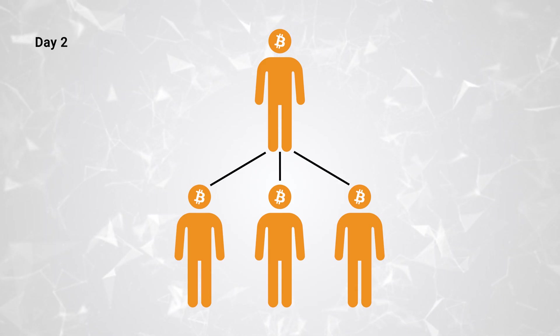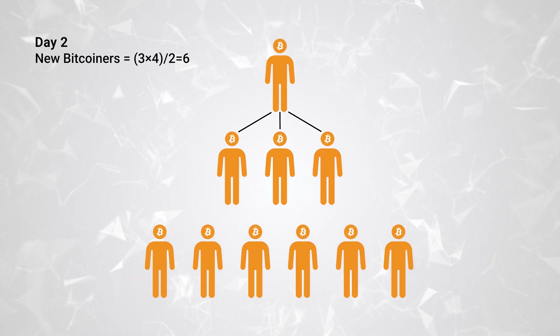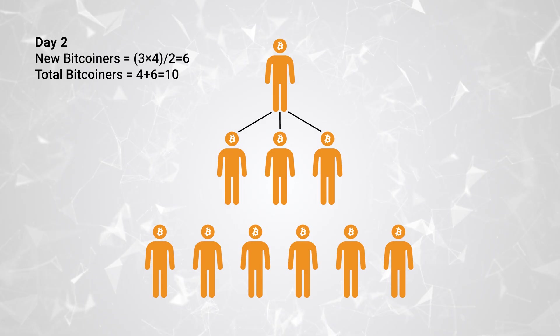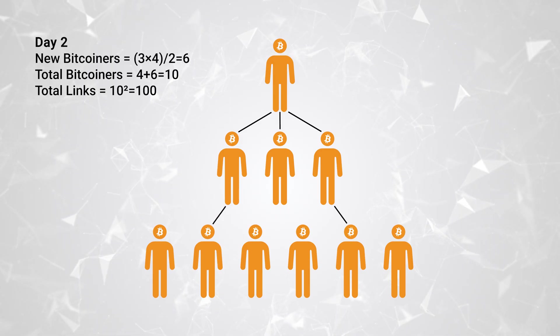On day 2, we start with 3 new Bitcoiners plus Satoshi himself from day 1, so a total of 4. Following the same rule, we multiply 3 by the total number of Bitcoiners, which is 4, and then divide it by the current day number, which is 2. This gives us 6 new Bitcoiners. Adding those to our previous total, we now have 10 Bitcoiners altogether. When using the simplification of links proportional to the square of the nodes, we have 100 links. That's a big leap, as everyone in the network connects with everyone else.